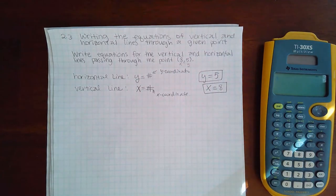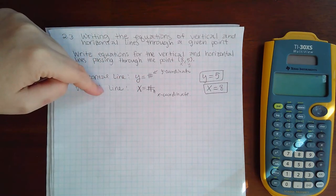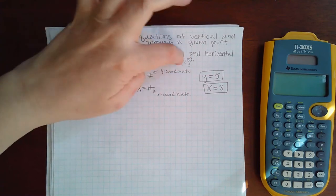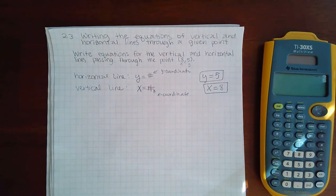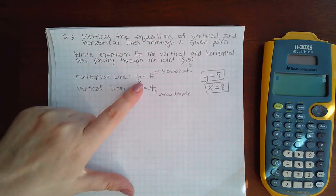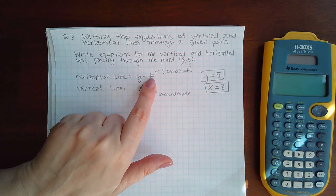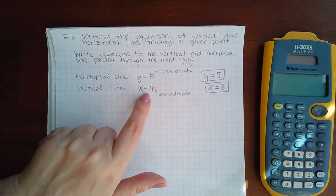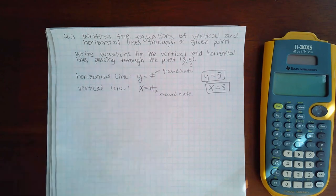Now, although that problem is very simple, you can also mess it up by using the wrong variable for the corresponding line or using the wrong coordinate for the equation. So be very careful that you're using y equals for horizontal, and that number there is a y coordinate. You're using x equals for vertical line, and that number on the right side should be the x coordinate.